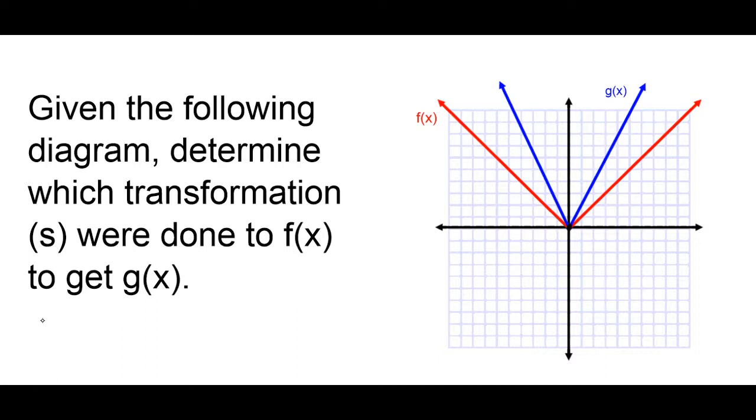So, this is an example of a dilation. We can say f of x is compressed to get g of x. And I'm just going to put in brackets here, dilation. That way, I'm saying what transformation is actually happening. It's actually a dilation, and in this particular example, it's being compressed.